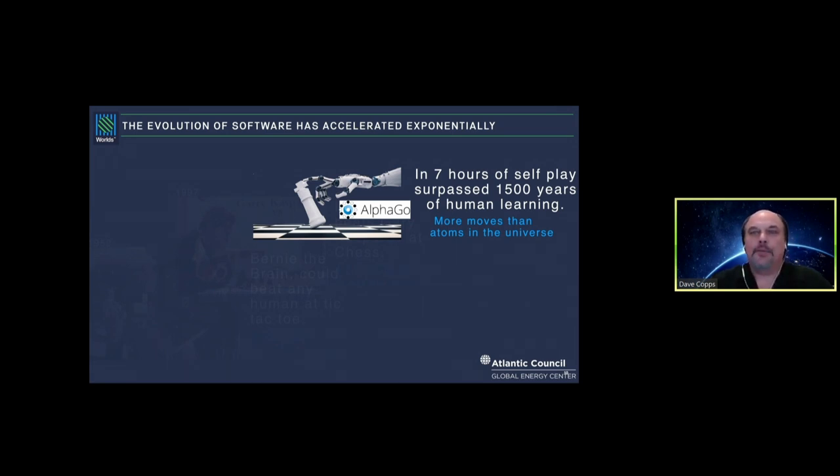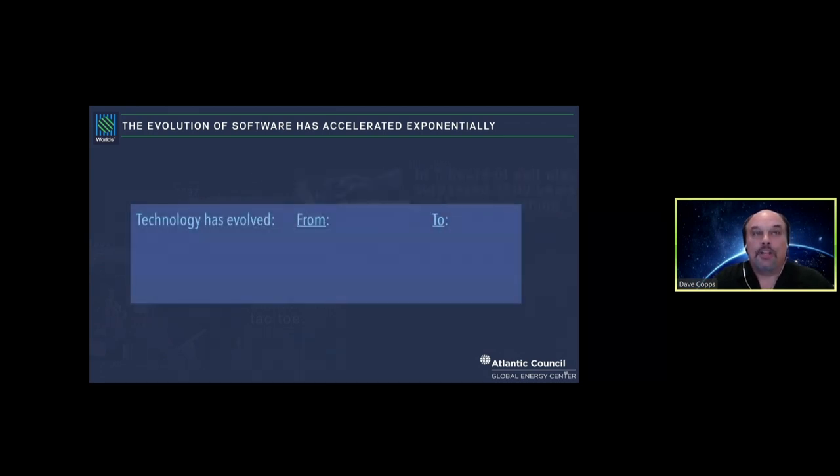Has anyone seen the movie War Games with Matthew Broderick? Remember at the end where WOPR, the computer, played itself in the game of thermonuclear war and said the only way to win is not to play? It learned by simulating war. That's really what's happening here today. Now we have technology that does not require data to learn, you can actually learn on the fly from experience. We've really evolved from things where technology has been obedient, static, and logic-based to automated, dynamic, and intuitive.